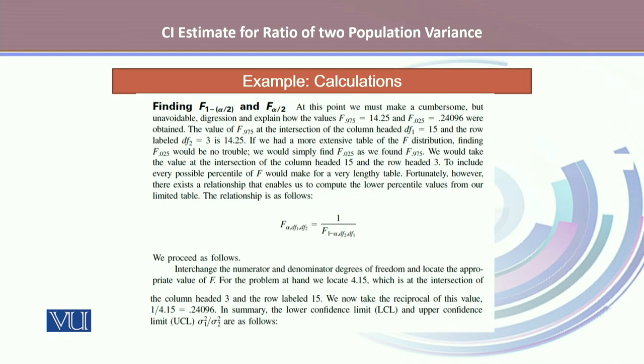It is very crucial when we measure the confidence interval for the ratio of two variances, how to calculate F values which will give us the reliability coefficient. To find F alpha by 2 and F 1 minus alpha by 2, it is slightly complex.